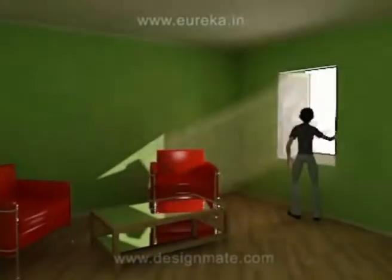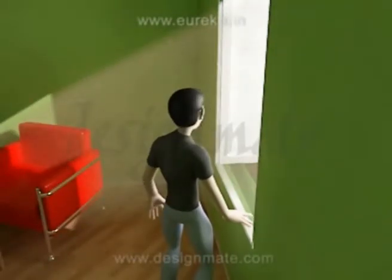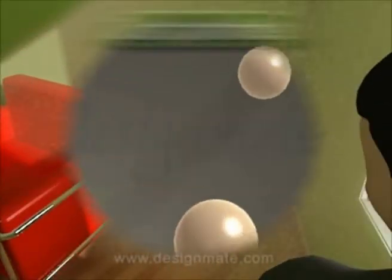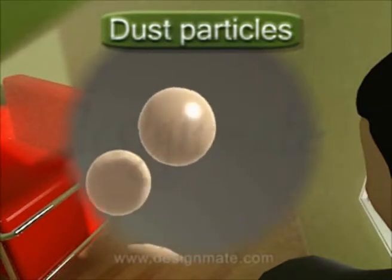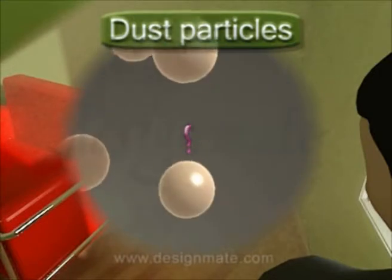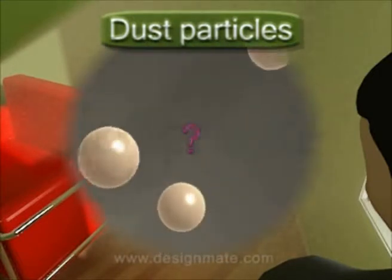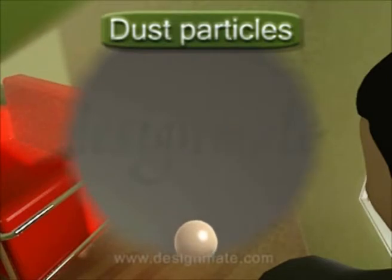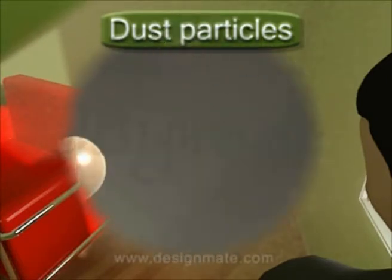If we closely observe the sun rays entering a room through a window, we can find minute dust particles moving randomly in air. Have you ever wondered why this happens? This type of random motion can also be observed in particles suspended in a liquid medium.